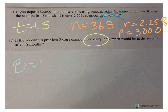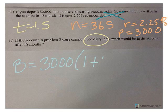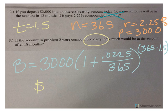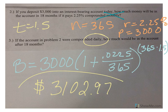So, balance equals principal, 1 plus 0.0225, because again, percent to a decimal, divided by N, which is 365, and then my exponent is going to be N times T. So, 365 times 1.5. And, when you punch that into your calculator, you will come up with an answer of $3,102.97.